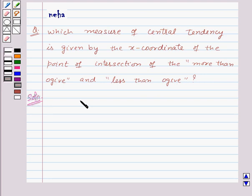the two ogives intersect at a point. When we draw a perpendicular from this point to the x-axis, the point at which it cuts the x-axis gives us the median.